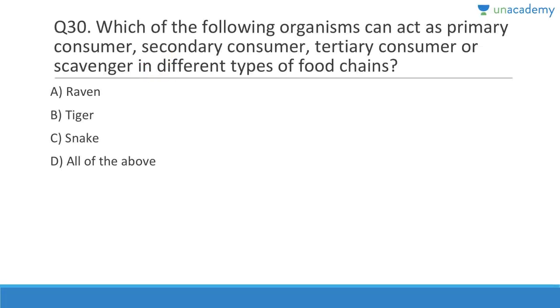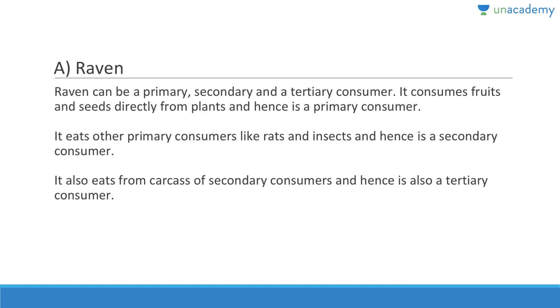Last question for this set: Which of the following organisms can act as primary consumer, secondary consumer, tertiary consumer, or scavenger in different types of food chains? Answer is A — raven. A raven can be a primary, secondary, or tertiary consumer: it consumes fruits and seeds directly from plants, eats primary consumers like rats, and also eats from the carcass of secondary consumers, making it a tertiary consumer or scavenger. Thank you for watching this lesson.